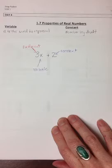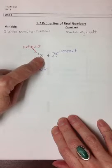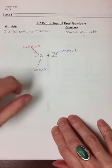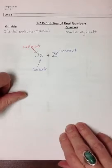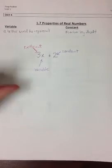If we wanted to evaluate it, we'd be given a value for x, and then we would use order of operations to solve. So let's look at some examples of doing that.